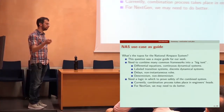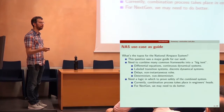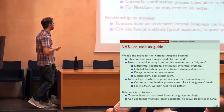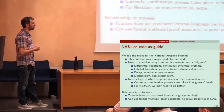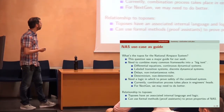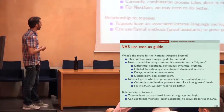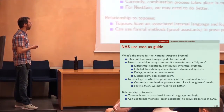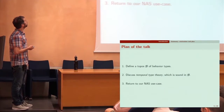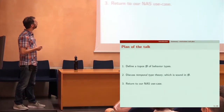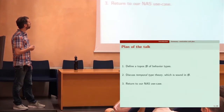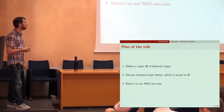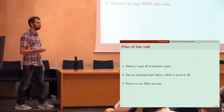Right now if you want to figure something out about differential equations or labeled transition systems you can — it's all mathematics — but if you want to put things together you can't. The relationship is that toposes have this internal language and logic, so we can use formal methods and proof assistants — we can actually plug these things into Coq and prove properties of the national airspace. The plan of the talk is to define the topos B of behavior types, discuss temporal type theory which is a sound fragment of the language of B, and return to the national airspace use case.